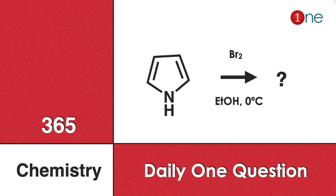Welcome to One Chemistry. This is the 365 Chemistry Series — daily one question for you. Here, pyrrole is given. You are reacting it with bromine in ethyl alcohol at low temperature. You have to find what will be the final product.